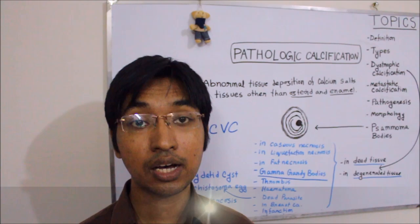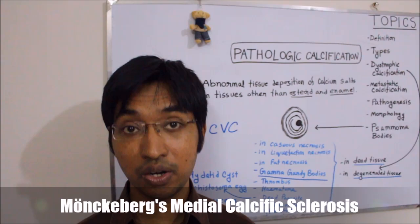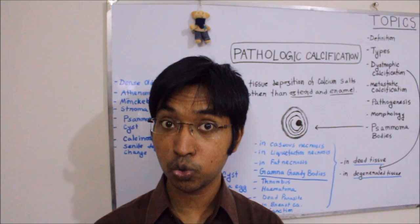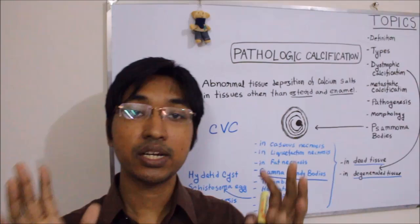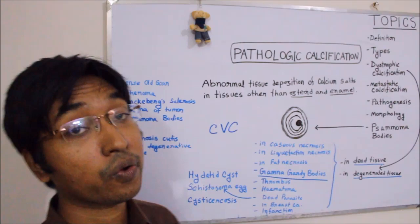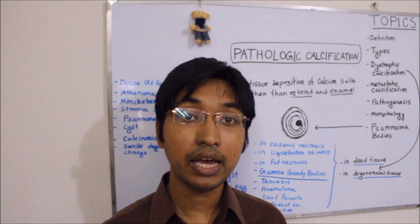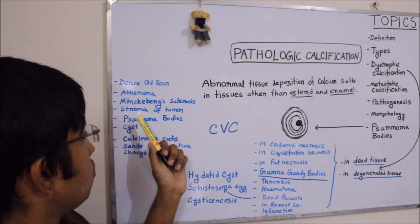Dystrophic calcification can happen in the tunica media of muscular arteries, usually in an elderly person, and that is known as Mönckeberg's medial sclerosis. Recall that any blood vessel has three layers: tunica intima (the innermost layer), tunica media (the muscular layer), and tunica adventitia. In Mönckeberg's medial sclerosis, there is dystrophic calcification in the tunica media, and it is common in muscular arteries of elderly persons.